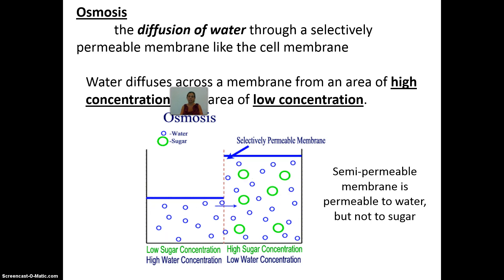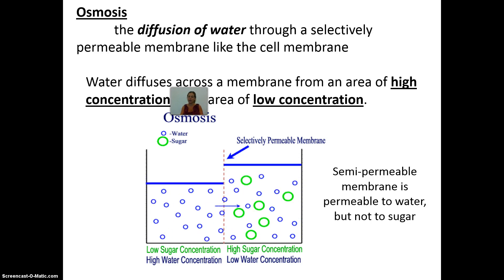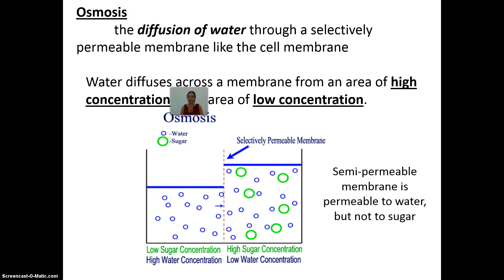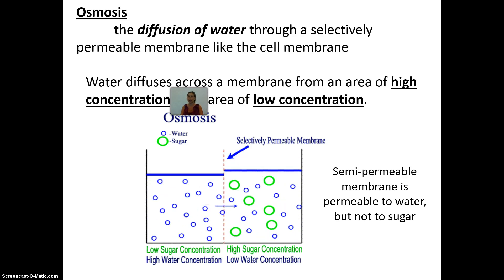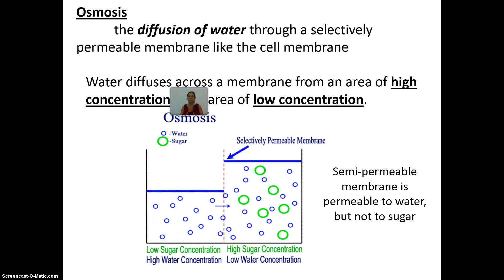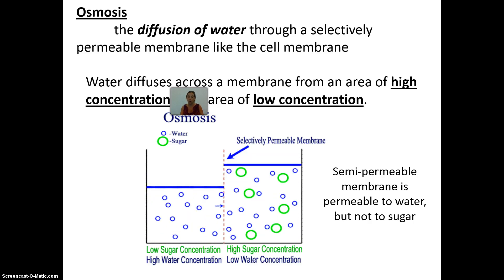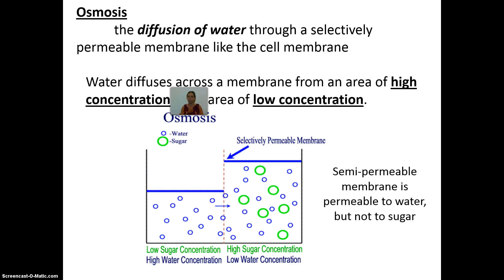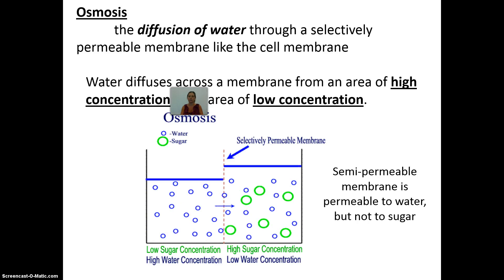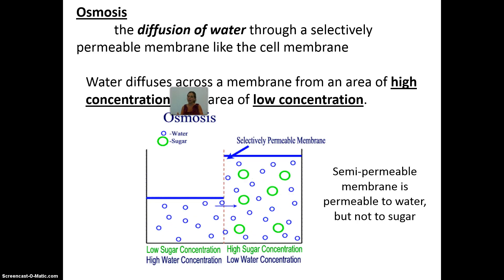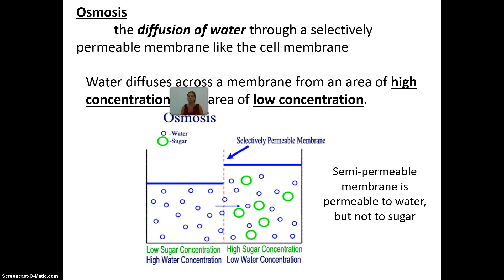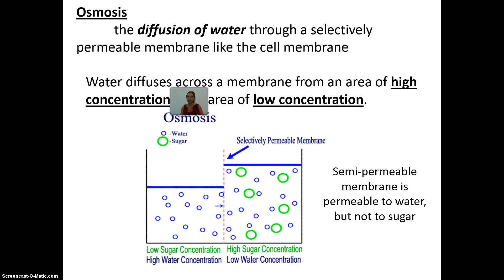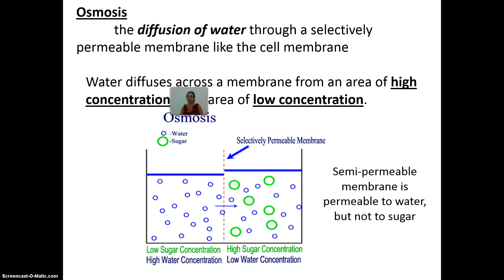Osmosis is simply a specific type of diffusion — the diffusion of water across a semi-permeable membrane like the cell membrane. Underline, bold, highlight, and capitalize the word water. It is the diffusion of water. Still going from a high concentration to a low concentration, water wants to spread out as much as it can, so it does not require any energy.